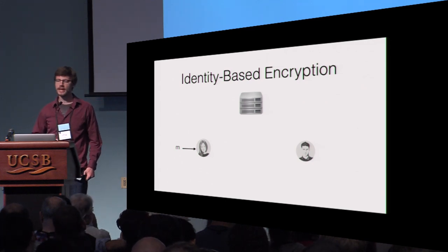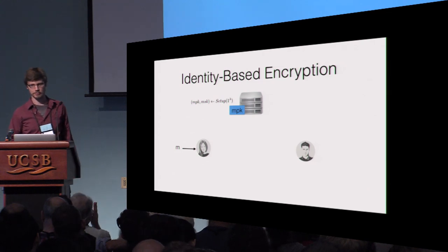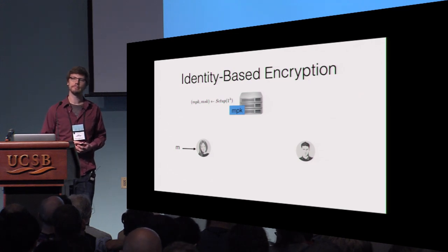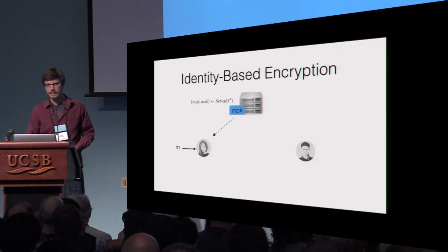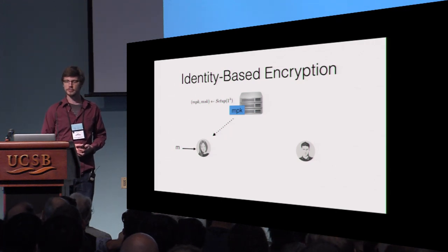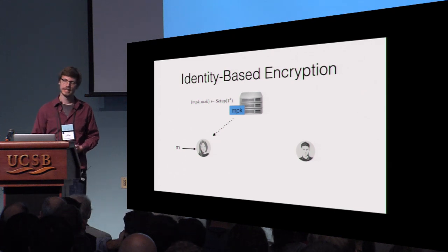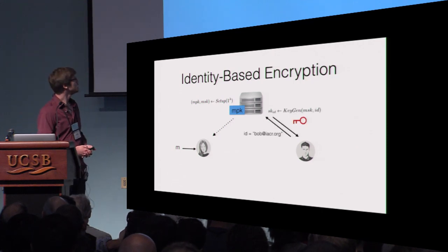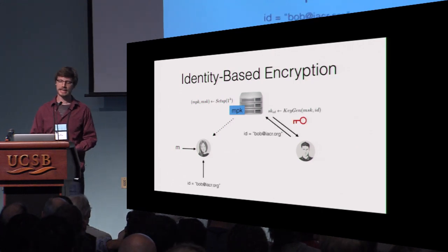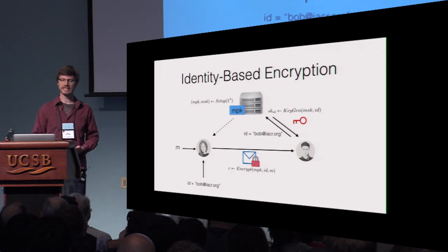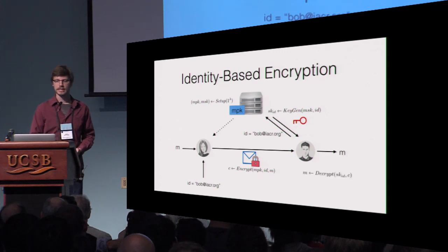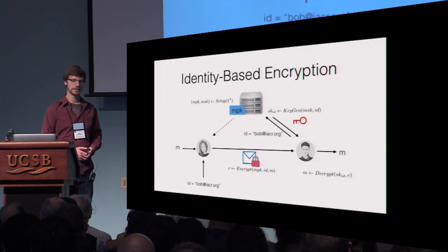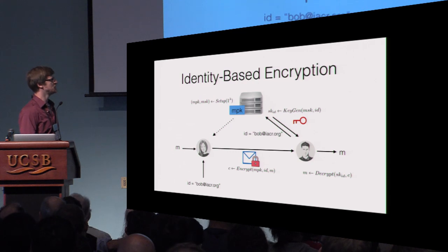We usually formalize this via the following four algorithms. There's a setup algorithm that generates a master public key and a master secret key, run by a trusted key authority. There's a key generation algorithm, also run by the key authority, which given any identity generates a corresponding user's secret key. Then there's the encryption algorithm which, given an identity, the master public key, and a message, computes a ciphertext under this identity. And finally, there's the decryption algorithm which, given a user's secret key and a ciphertext, outputs the corresponding plaintext message M.